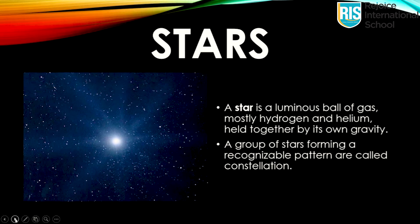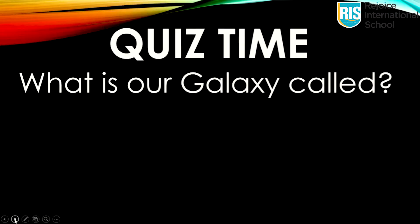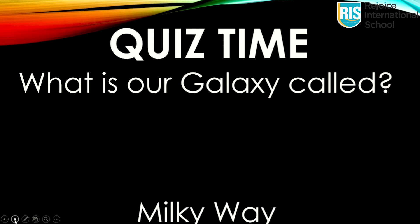So kids, we learned about five objects that can be found in space. Let me ask you what we learned in the form of a quiz. Are you ready for my questions? My first question is: what is our galaxy called? Come on kids, think. I know you will get an idea. The answer is Milky Way.